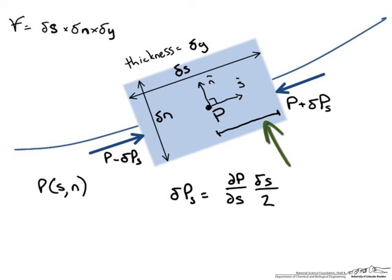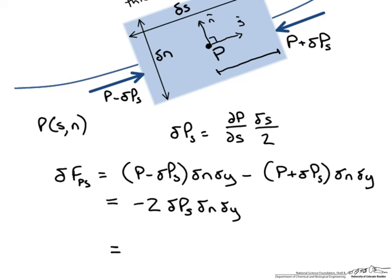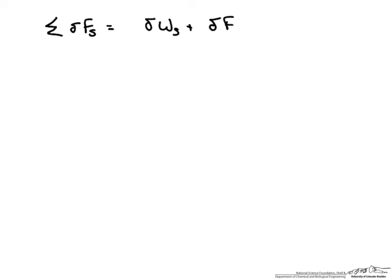The total pressure force fps acting on the fluid element is going to be on the left side p minus delta ps times the area delta n times delta y, minus the pressure acting on the right side p plus delta ps times the area delta n delta y. This simplifies quickly, and plugging in what we know for delta ps we get our force due to pressure. So we sum up our delta forces in the streamline direction as the weight force plus the pressure force.